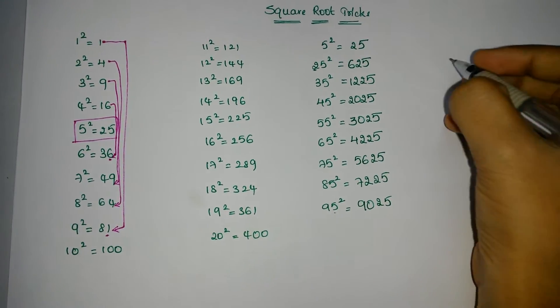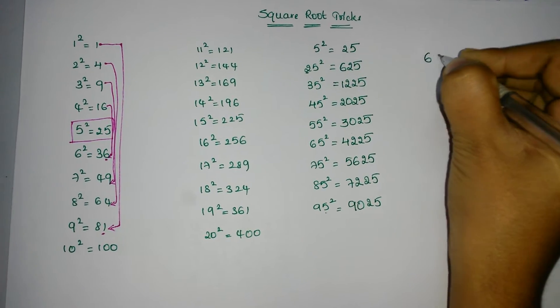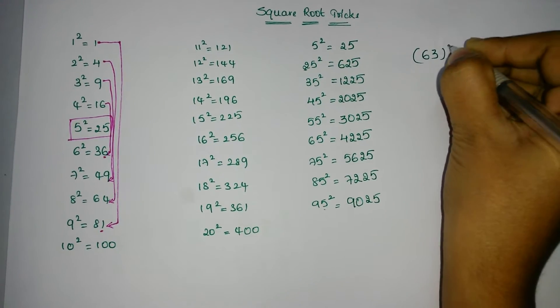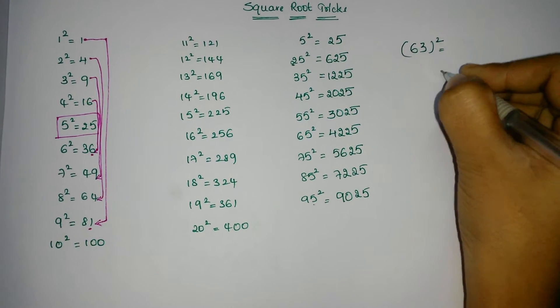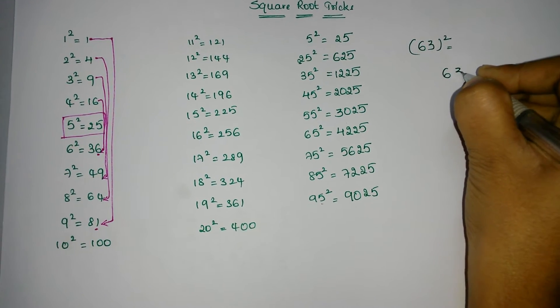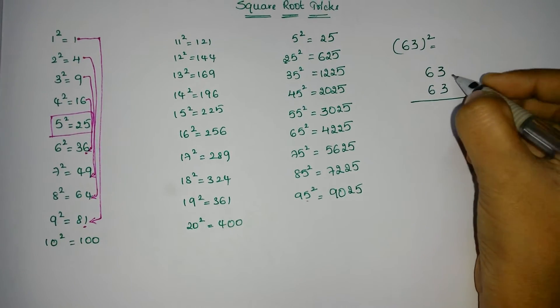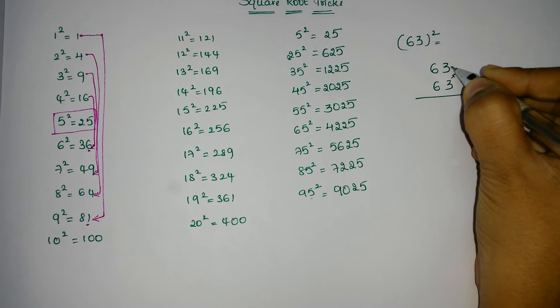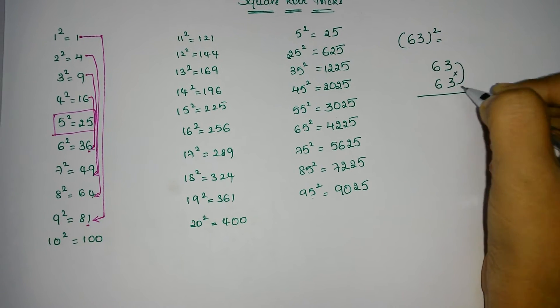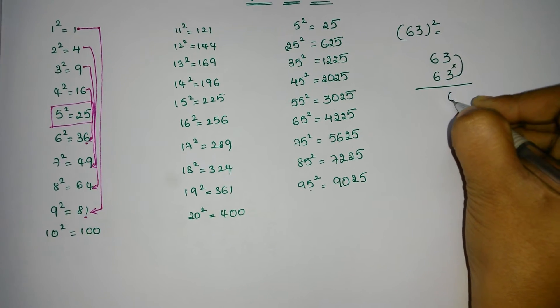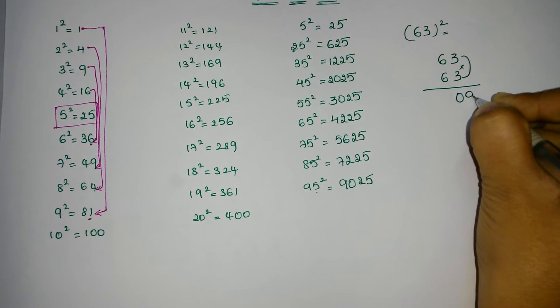Next, we have a simple problem. See here, how to find 63 square. Take 63 and 3. Now multiply both these: 3 into 3 is 9, so write as 09.